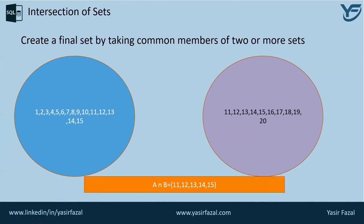So the answer is: A intersection B equals 11, 12, 13, 14, and 15. Here you can see there is set A and set B, and the intersection is denoted by a reverse U sign — you can say it looks like an 'n' but it's a reverse U sign.